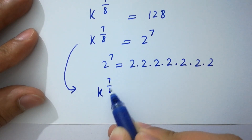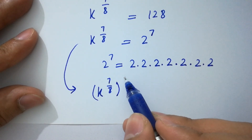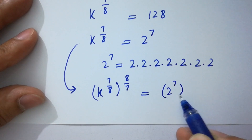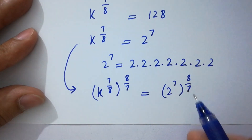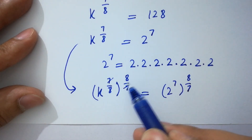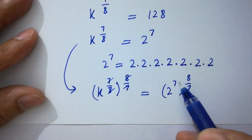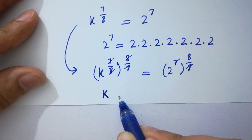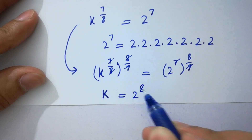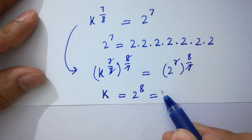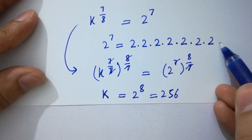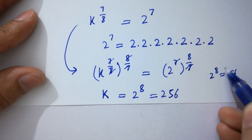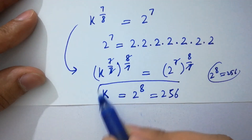Now take the power 8 over 7 on both sides. k to the power 7 over 8, to the whole power 8 over 7, equals 2 to the power 7 to the whole power 8 over 7. Here 7 and 7 cancel, and 8 and 8 cancel, so we get k equals 2 to the power 8, which is equal to 256. So 256 is the value of k.